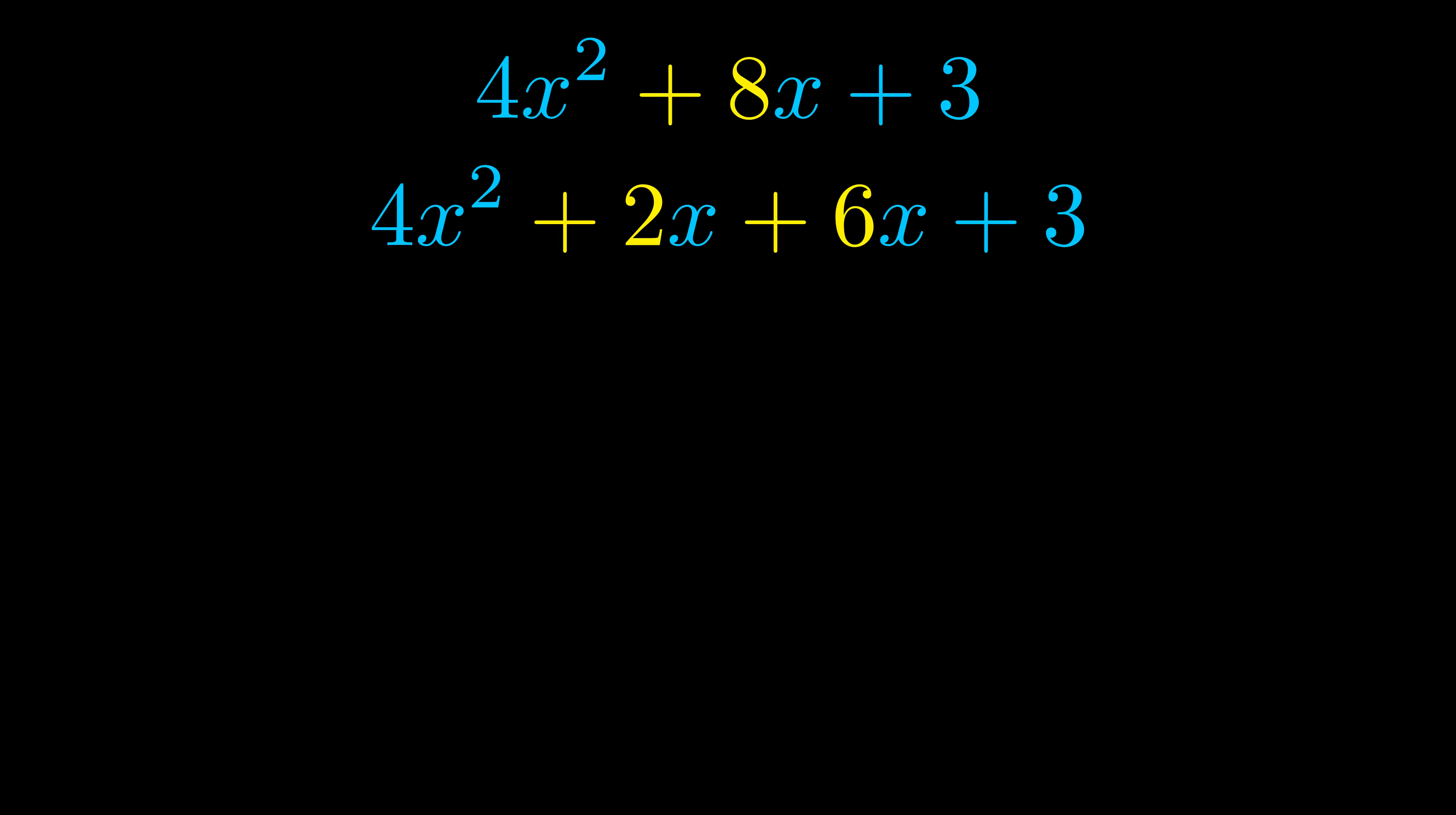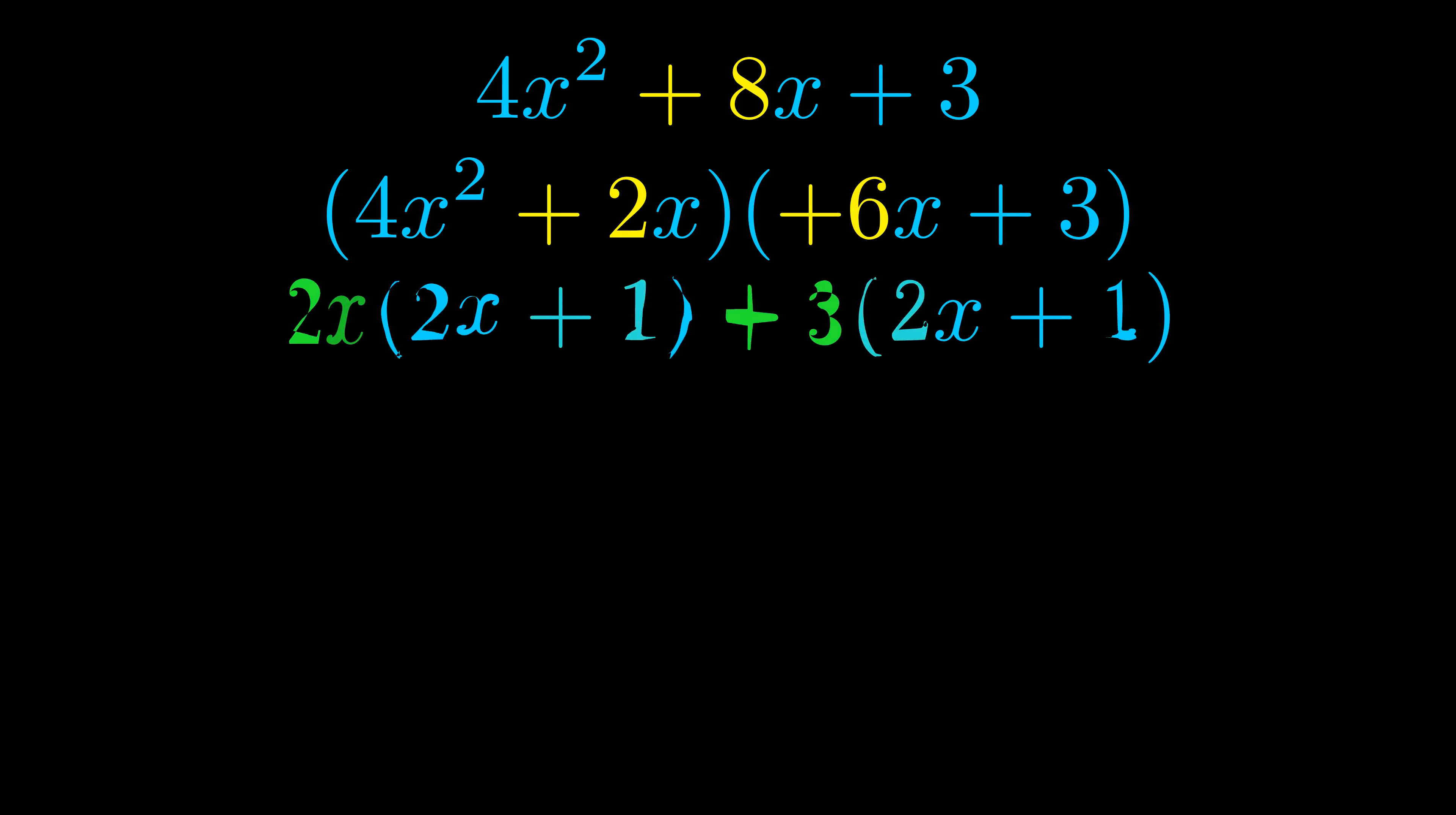Once we've done this we go ahead and put parentheses around the first term and the last term and we do that so that we can take the greatest common factor out of both terms. We can see the greatest common factor is now outside in green. Notice also how what remains inside of the parentheses is the same in both cases. The blue values are the same.